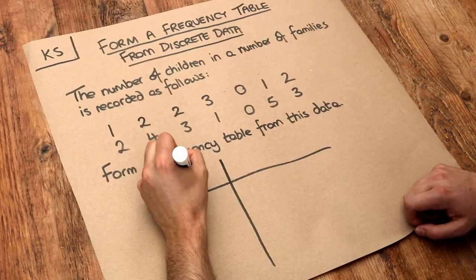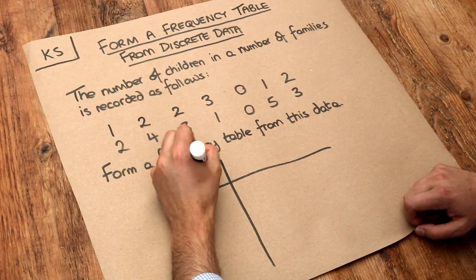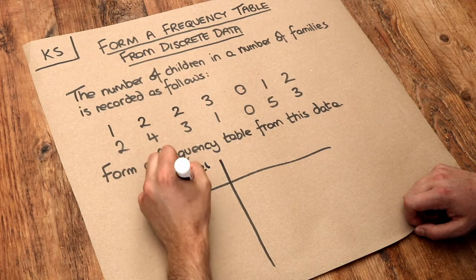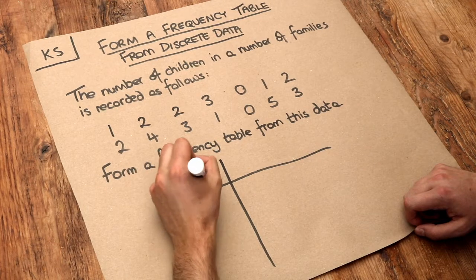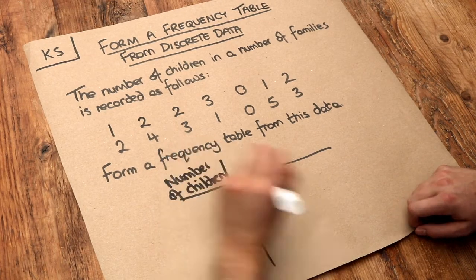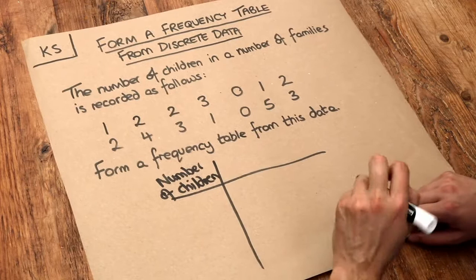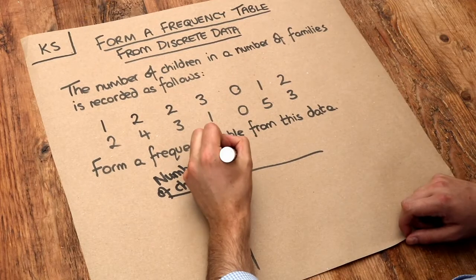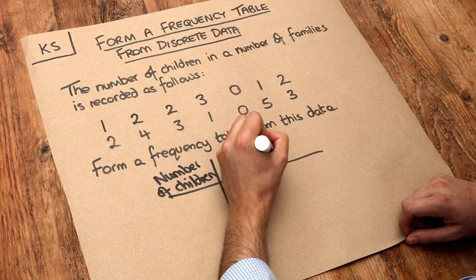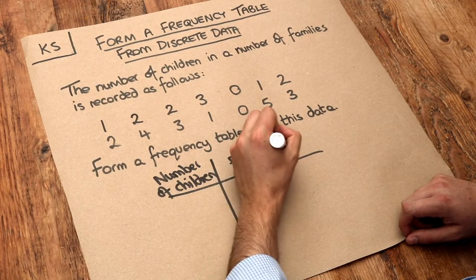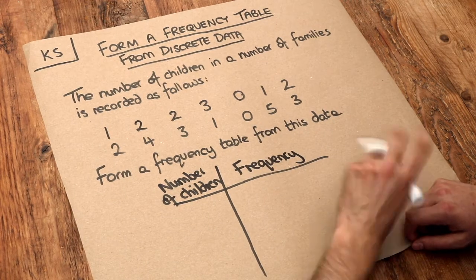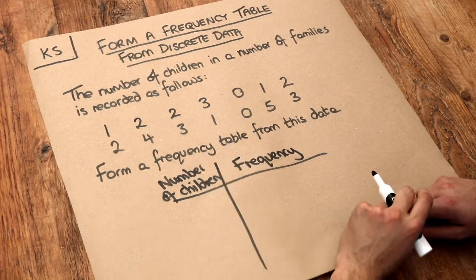Now all we need to do is put the different number of children in each family in the first column. And in the second column we're going to always have frequency. And frequency just means how common each value is.